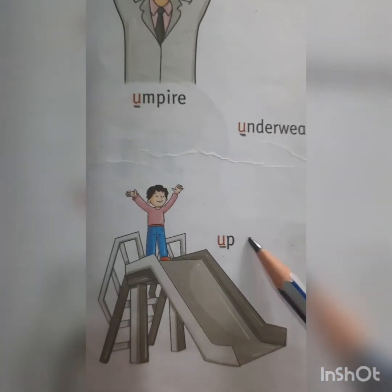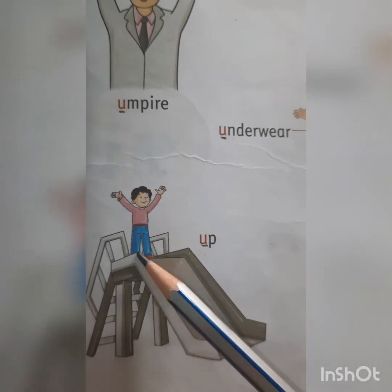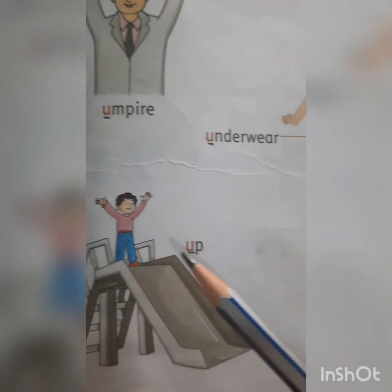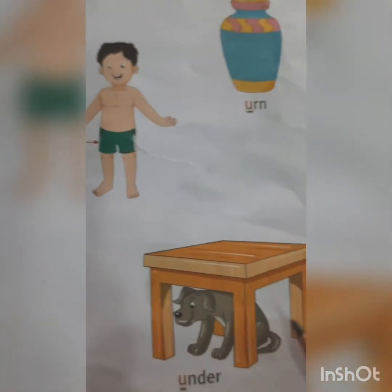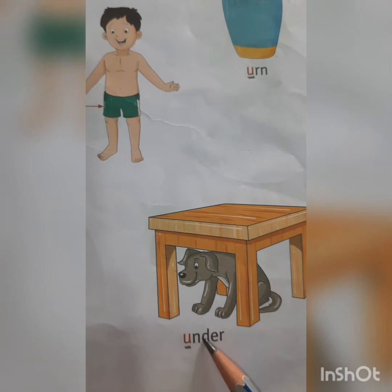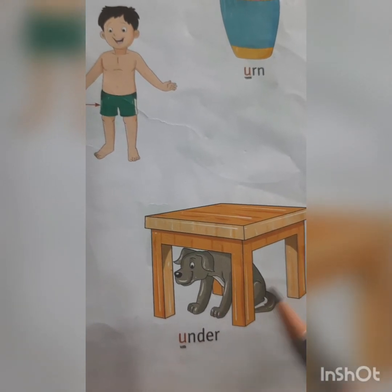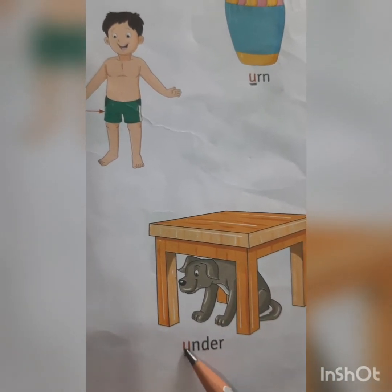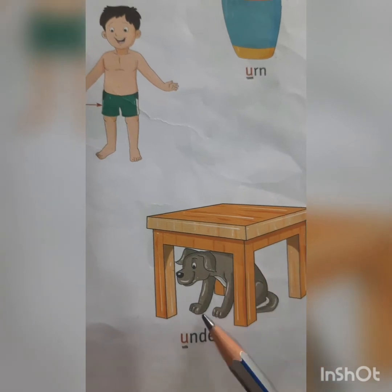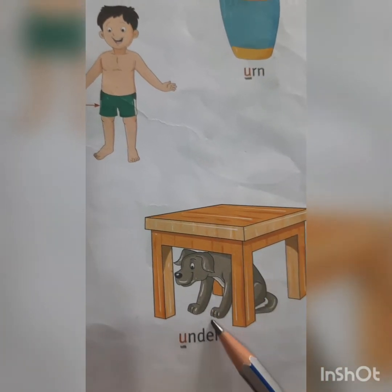U-P. Up. Where is the boy? He's standing up. Where is the dog? U-N-D-E-R. Under the table. The dog is under the table.